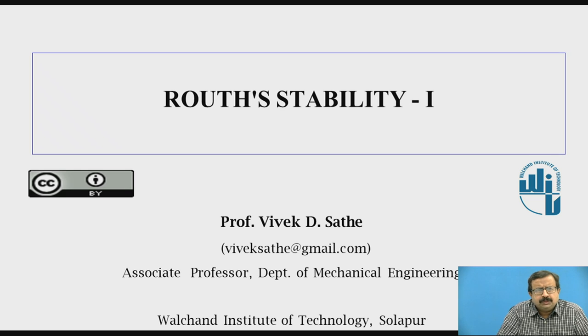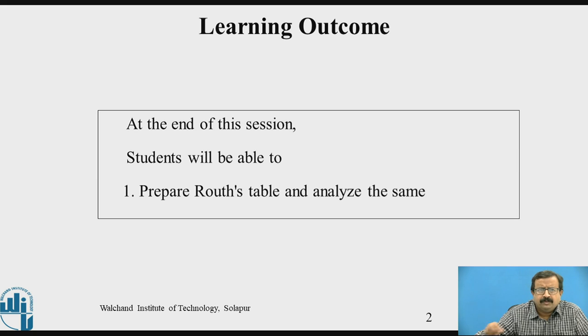We have already finished two sessions or two videos in which we learned the necessary condition and sufficient condition for the characteristic equation to be stable. We have categorically mentioned that from a mathematical point of view, you must have both things satisfied, necessary as well as sufficient condition. Now today we are going to learn the Routh's table and analyze the given characteristic equation using that particular table.